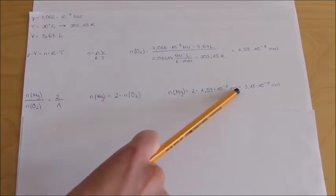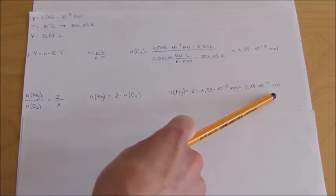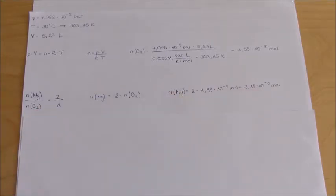So n(Mg) is 3.18 × 10^-8 mol. In our final step, we calculate the mass of magnesium.